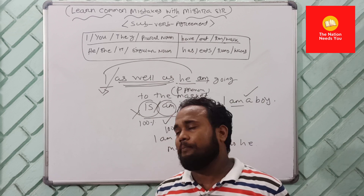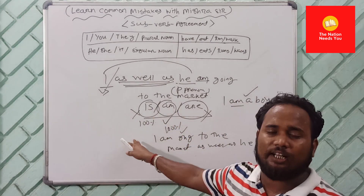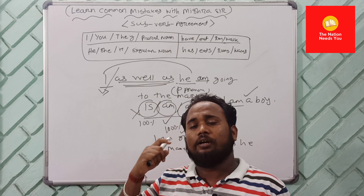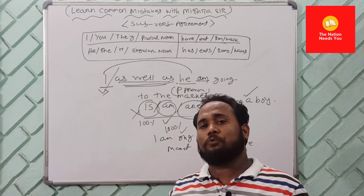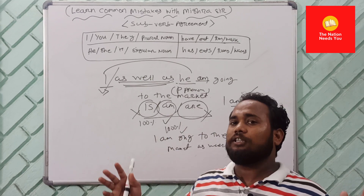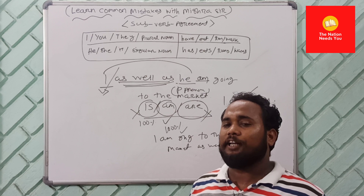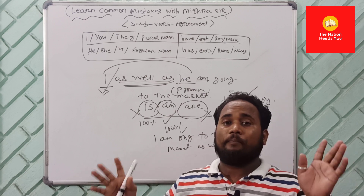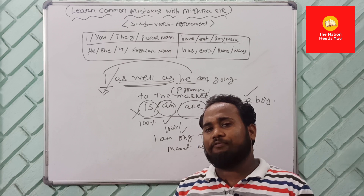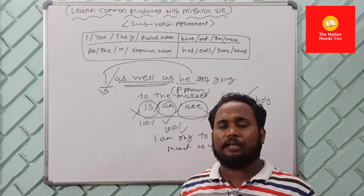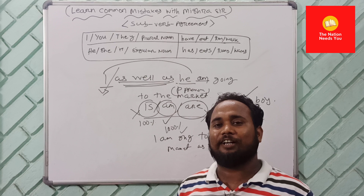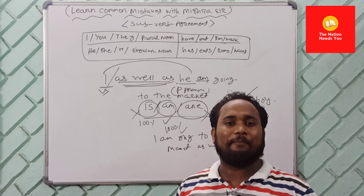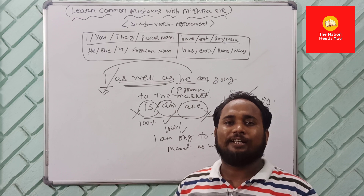That was one question on subject-verb agreement. In the next video I will come with new questions along with other common mistakes. One time making a mistake is okay, but making the same mistake three, four, or five times is going to be an offense. Thank you so much for spending your time with me. Have a nice day!